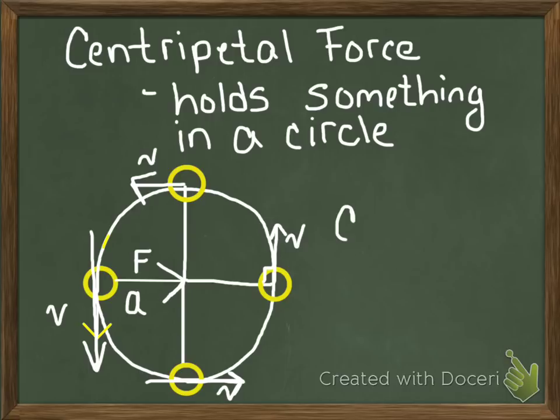So here's how you calculate centripetal acceleration. You're going to use acceleration centripetal is equal to the velocity squared, and that is going to be divided by the radius. So radius of the circle is the length of one of those vectors there, divided by the radius. So centripetal acceleration is just v squared divided by r. Pretty simple, right?